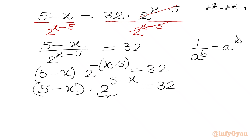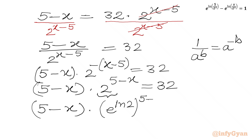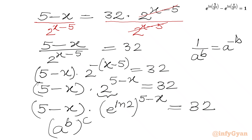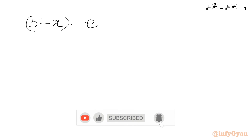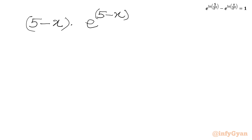We rewrite 2 as e^(ln 2), so the equation becomes (5 - x) times e^(ln 2) raised to the power (5 - x) equal to 32. Applying the property (a^b)^c = a^(b·c), we multiply the powers to get (5 - x) times e^((5 - x) · ln 2) equal to 32.